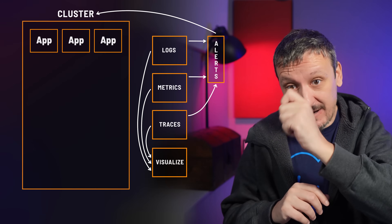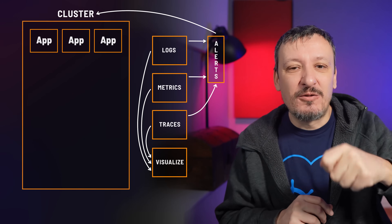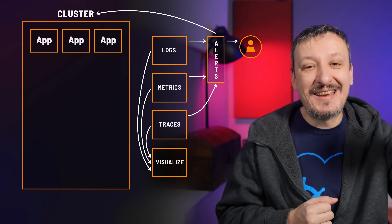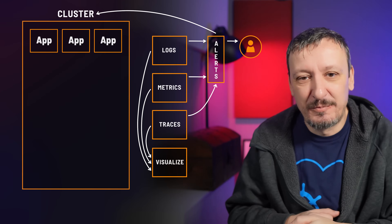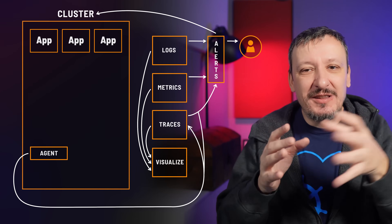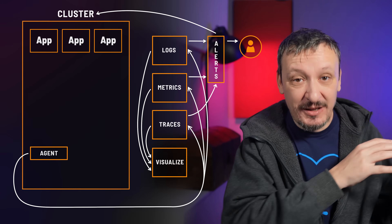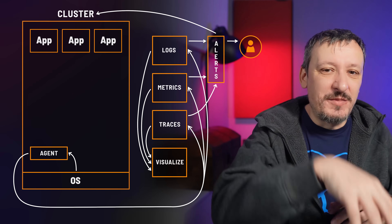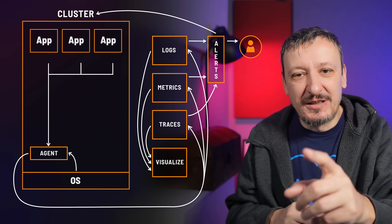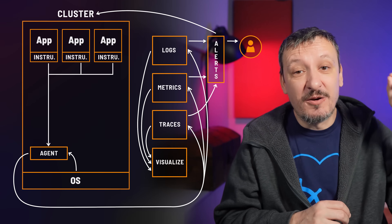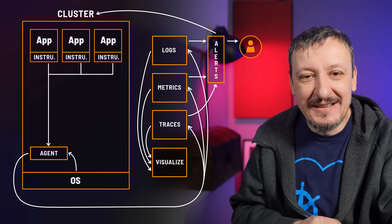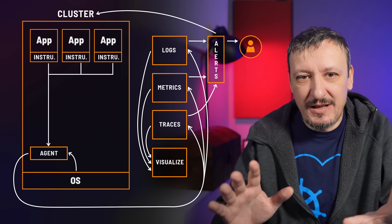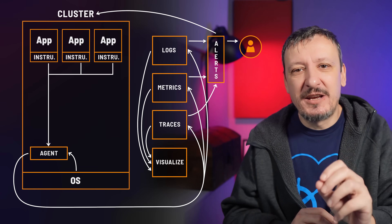We need to set up alerts that will notify the system so it can auto-correct itself, and alerts that notify us when it cannot. We also need agents or exporters that collect and send data to those stores — collecting data from the operating system or from the applications. Finally, and most importantly, we need to instrument our code so we can collect the data we need.